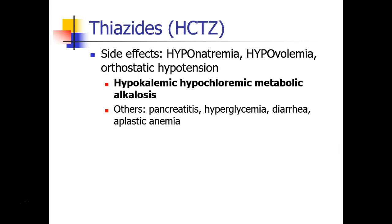Side effects of thiazides will be similar to loop diuretics: hyponatremia, hypovolemia, some orthostatic hypotension, and a hypokalemic, hypochloremic metabolic alkalosis. Other, less common side effects include pancreatitis, hyperglycemia, diarrhea, and aplastic anemia.